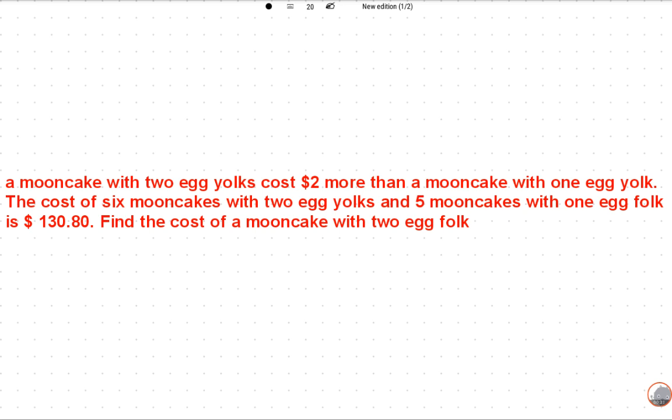The cost of six mooncakes with two egg yolks and five mooncakes with one egg yolk is $130.80. Find the cost of a mooncake with two egg yolks. This is a very simple question.